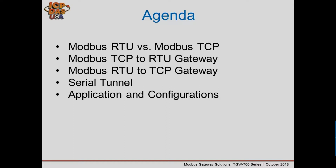Second, we'll do the opposite solution where a Modbus RTU master communicates to a Modbus TCP slave. Then we'll cover a serial tunnel application where two serial networks connect through an Ethernet connection. Finally, we'll go over applications and how to configure the modules.